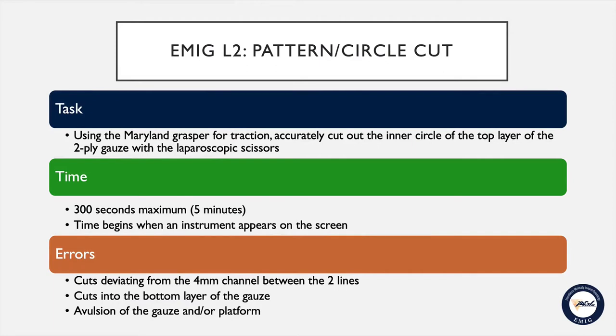To perform this task, you will use the Maryland grasper for traction and you will accurately cut out the inner circle of the top layer of the two-ply gauze with the laparoscopic scissors. The maximum time limit for this task is five minutes or 300 seconds.